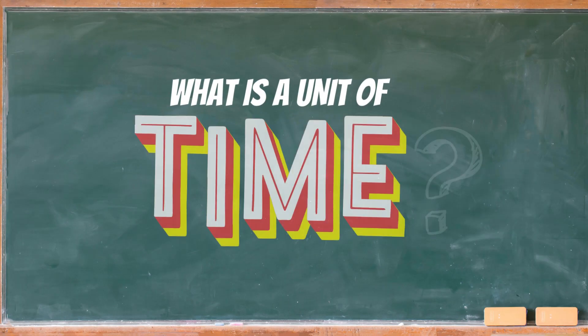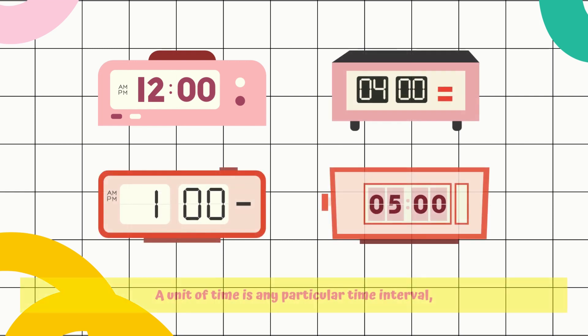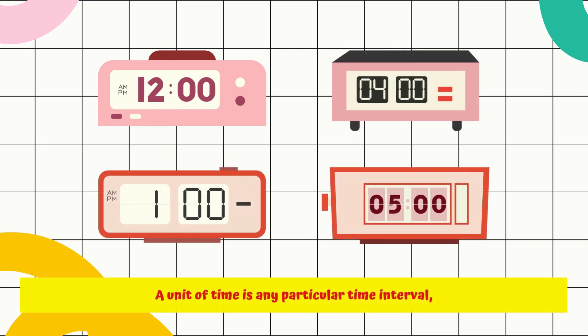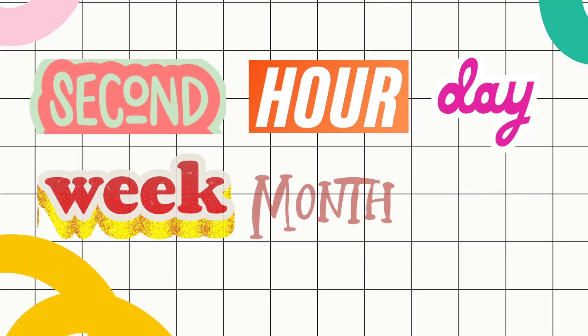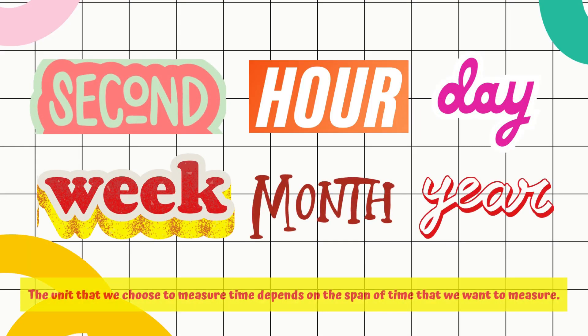Now, what is a unit of time? A unit of time is any particular time interval used as a standard way of measuring or expressing duration. The unit that we choose to measure time depends on the span of time that we want to measure.